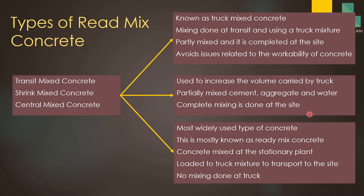There are three main types of ready mix concrete: transit mix concrete, shrink mix concrete, and central mix concrete. Transit mix concrete, also known as truck mix concrete, involves mixing done during transit using truck mixers. The partially mixed concrete is transported, and when you are close to the site the mixing is completed, or mixing is completed at the site. This can also be an advantage when there are workability issues with the concrete.